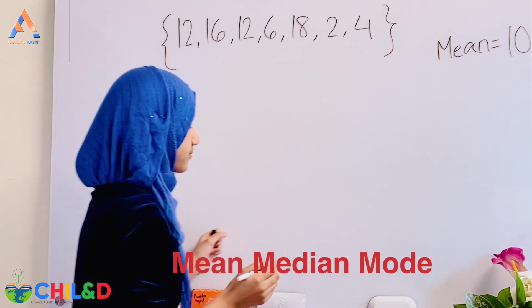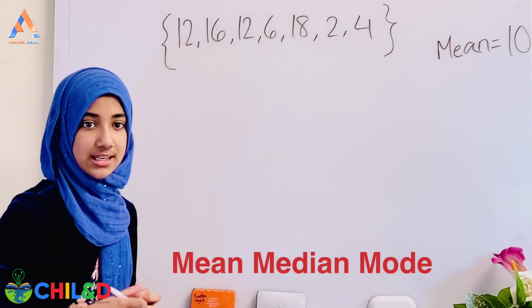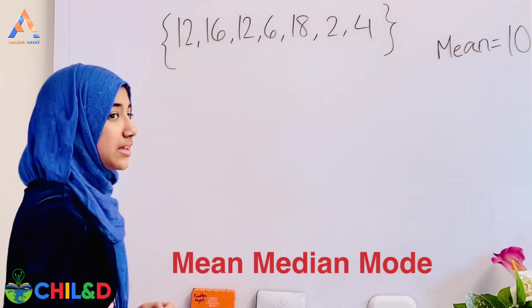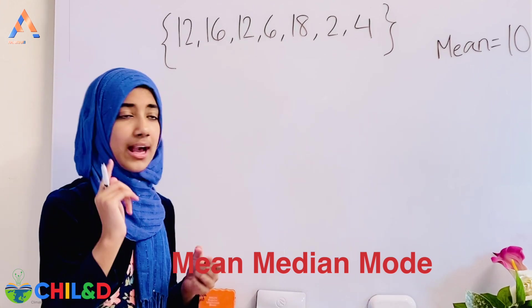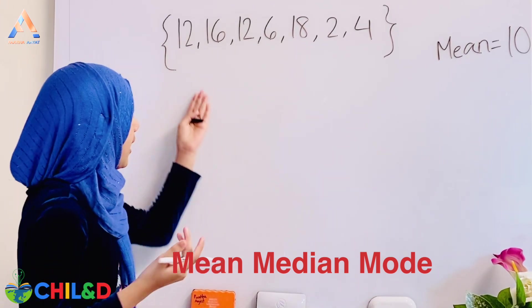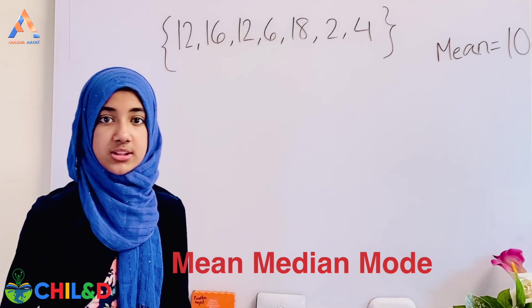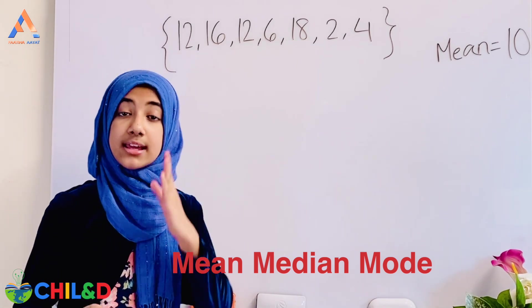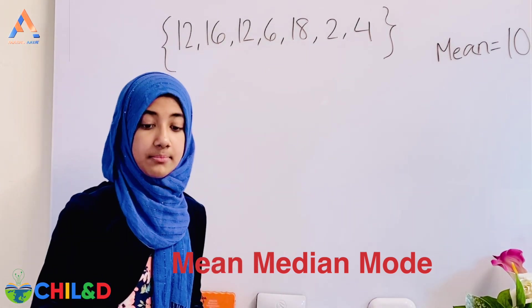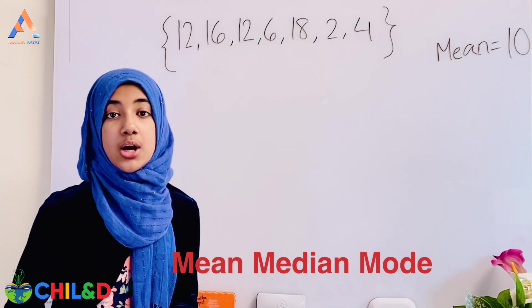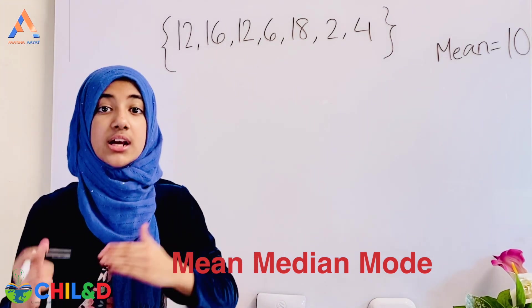Mean is 10. Now I'm going to discuss the median. The median is basically the middle value. To find the middle, we need to use ascending order.